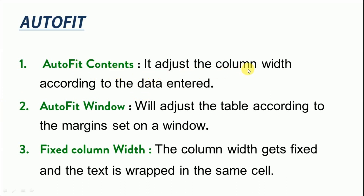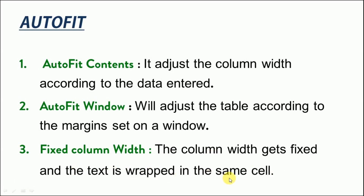Auto Fit Contents, as the name suggests, adjusts the column width according to the data entered. Auto Fit Window adjusts the table according to the margins set on the page. Fixed Column Width keeps the column width fixed, and text is wrapped within the same cells. Now let's move to Word and understand these practically.